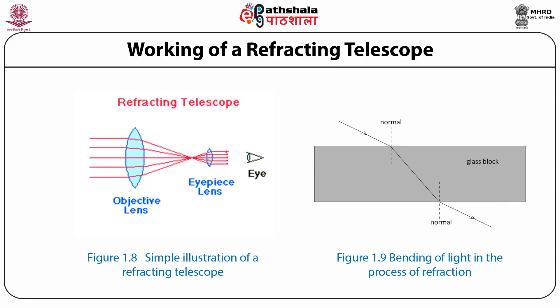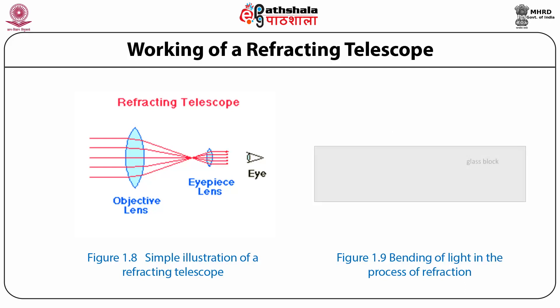In this diagram, light is leaving air and entering glass, so it bends towards the normal on the way in and away from the normal on the way out of the glass.